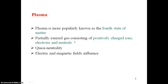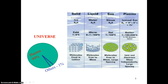Plasma has some peculiar properties such as quasi-neutrality and collective behavior, and it has electric and magnetic fields. Plasma has positive charges as well as negative charges, which are electrons, and neutral charges. The positive charges are equal to the negative charges — this property is known as quasi-neutrality. Plasma occurs 99% in the universe; the rest of the 1% is all the other materials available in the universe.